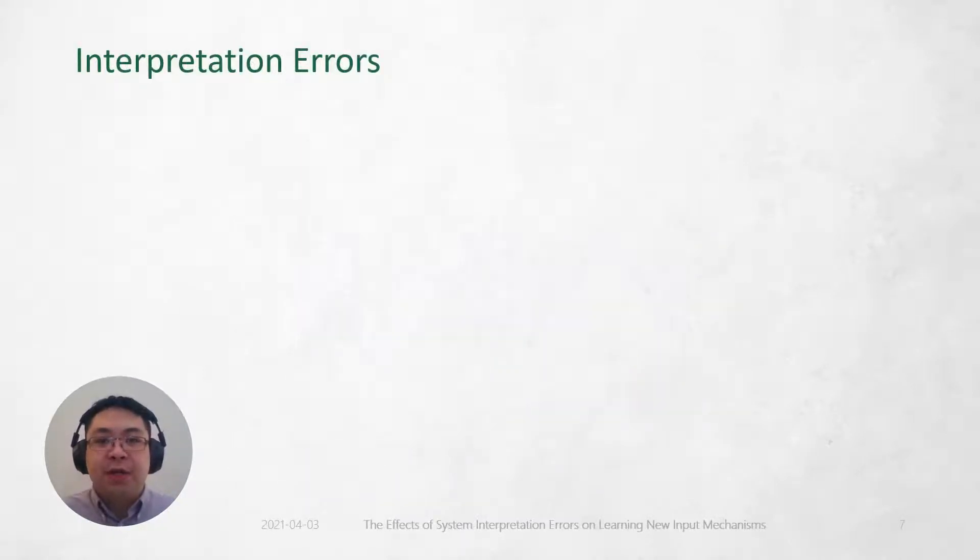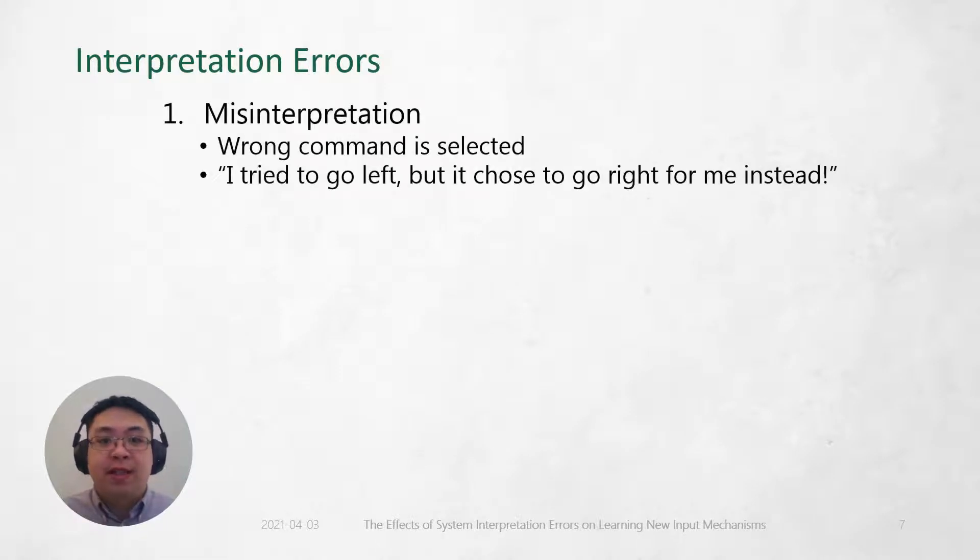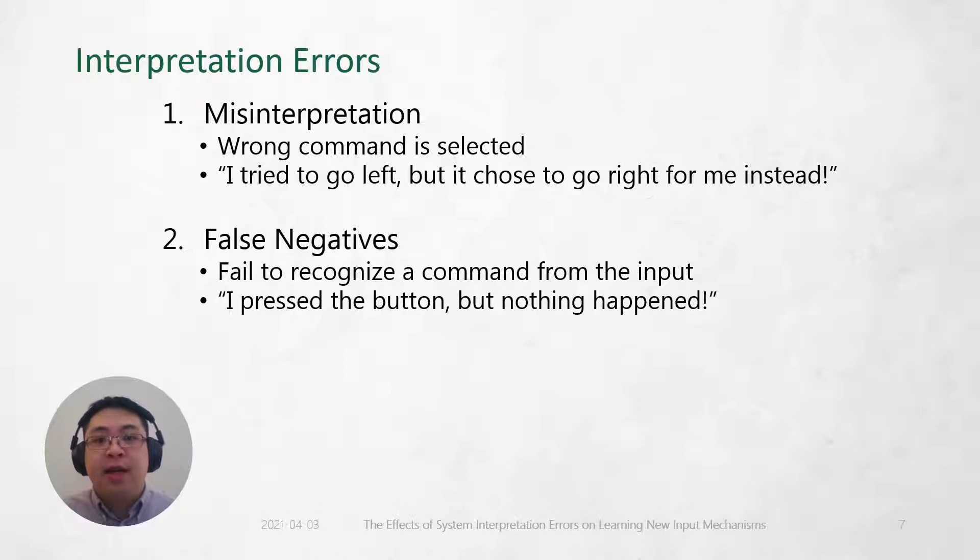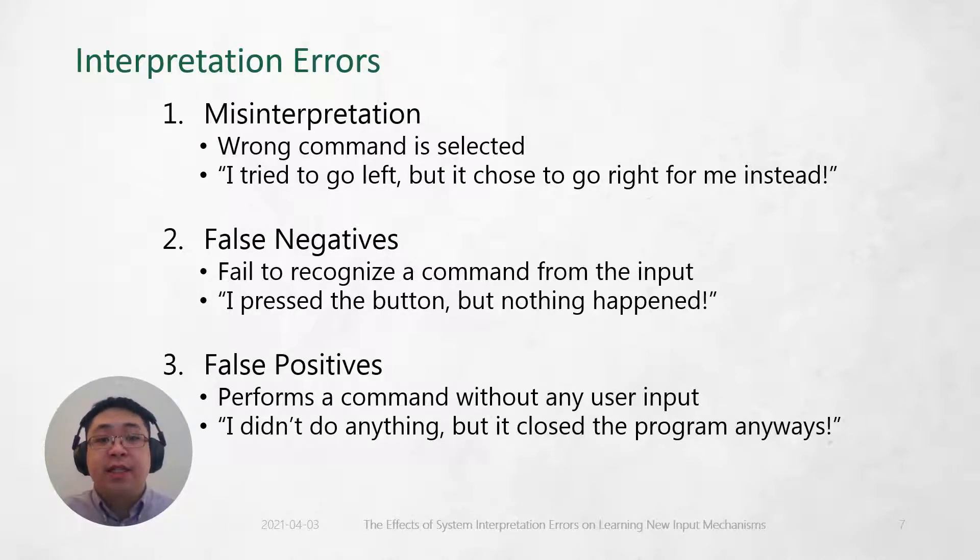Interpretation errors occur when the system interprets the user's intended command incorrectly. These errors often result in one of three types: misinterpretations, where the wrong command is selected; false negatives, where the user enters an input but the computer fails to recognize the command; and false positives, where the system executes a command without the user inputting anything.